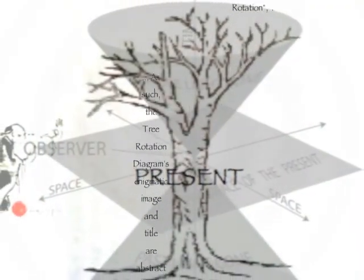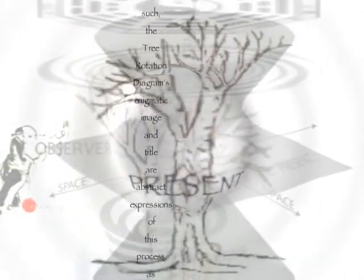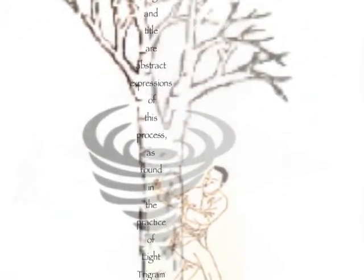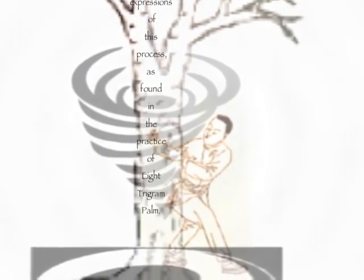In this way, the tree rotation diagram's enigmatic image and title are abstract expressions of this process, as found in the practice of eight-trigram palm.